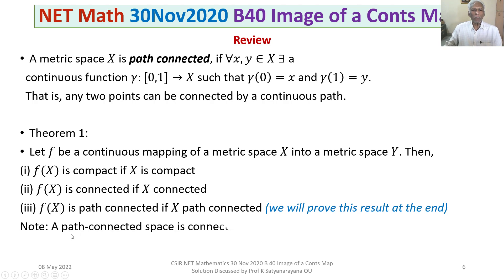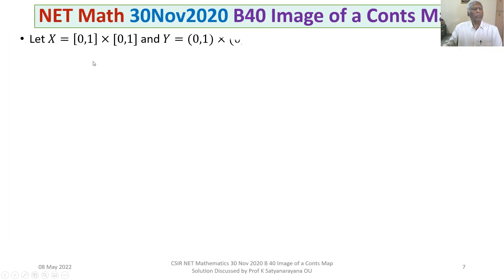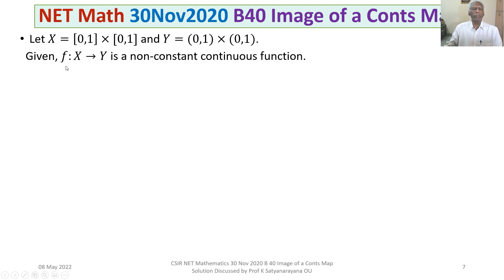Note that a path-connected space is always connected, but the converse is not true. Now we have the two metric spaces: X is [0,1] × [0,1] and Y is (0,1) × (0,1). Given f is a non-constant continuous function from X to Y.